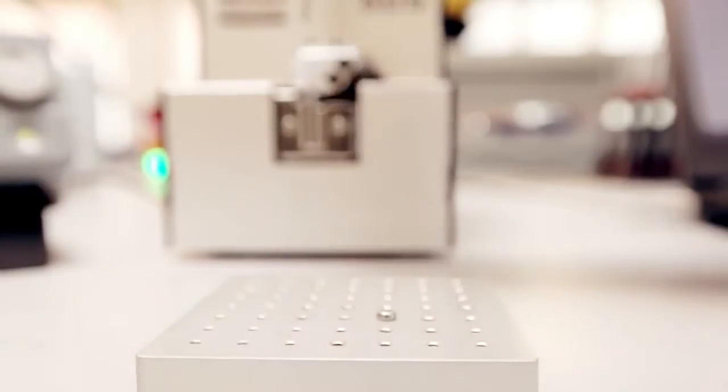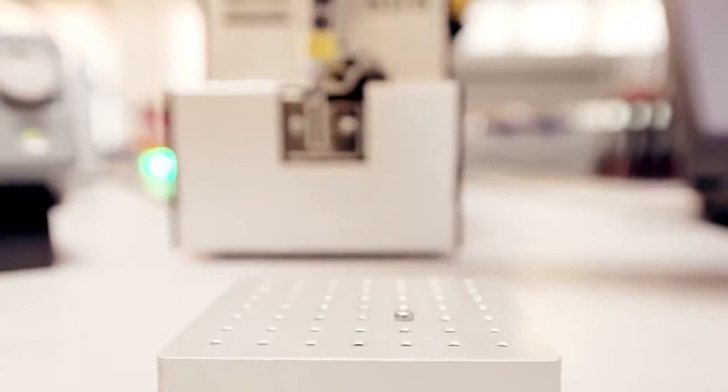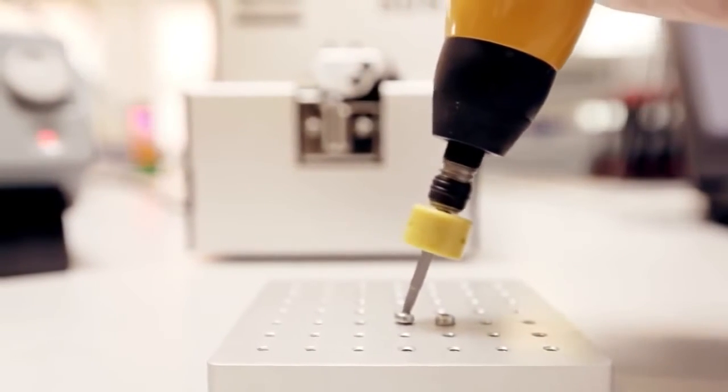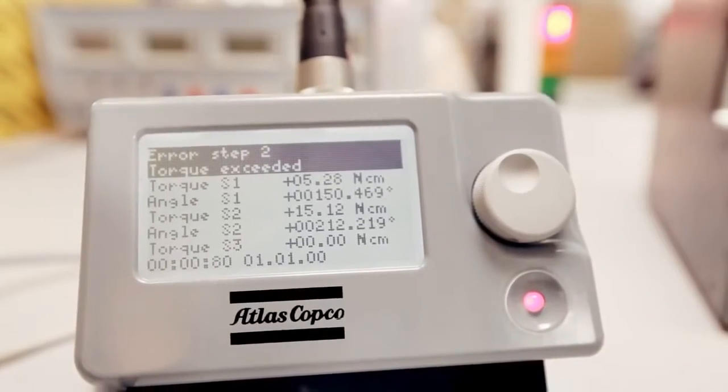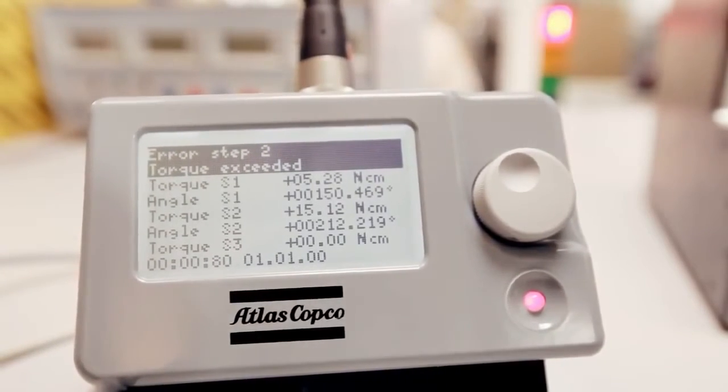A misaligned screw, a so-called cross thread, is detected by the fact that the tightening will reach final torque before the joint is tightened correctly. Torque is exceeded and the angle is too low.